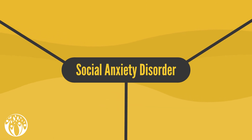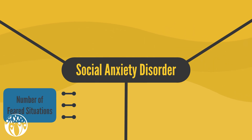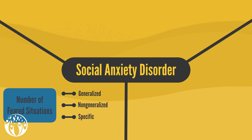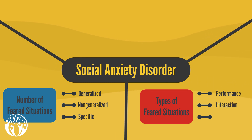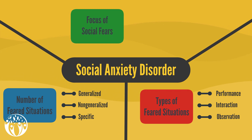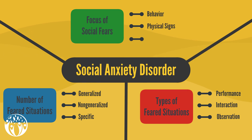Wrapping up, there have been various proposals for the division of SAD sufferers into different subgroups. One way of dividing is based on the number of situations feared by the individual, ranging from generalized SAD over non-generalized SAD to the specific subtype, which represents the subgroup with the least feared social situations. Another attempt focuses on the type of feared situations, differentiating between performance situations, interaction situations, and observation situations. A third way of subgrouping takes a look at the focus of the social fears, which relate to behavior, the physical signs of anxiety, and concerns about offending others.